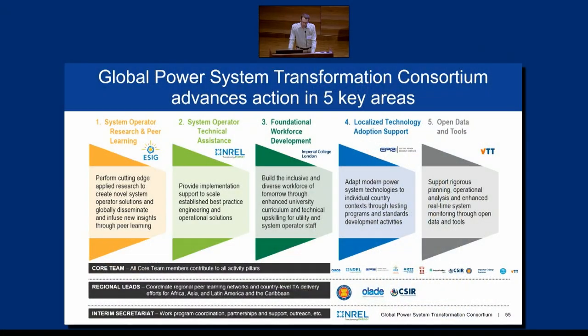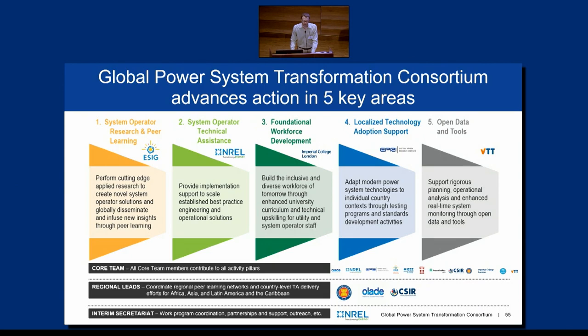We're organized into kind of five pillars as far as the actual work that we do. Pillar one is all about looking forward and identifying what research questions haven't we solved yet that we're going to need to solve to get to these really high levels of renewables that we want to integrate in our power systems — articulating that research agenda and then laying out the pathway to solve those questions with our research partners, including NREL.